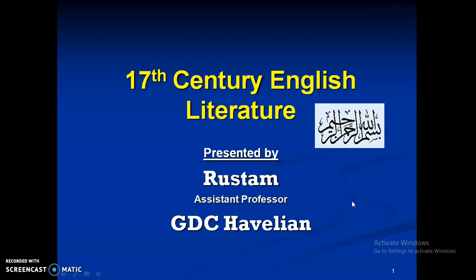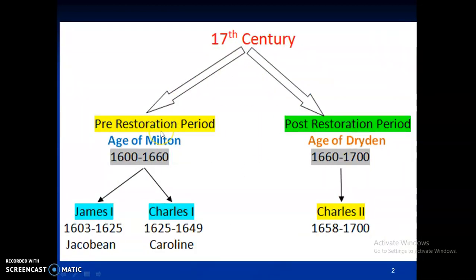Now the 17th century is further divided into two strata or two sub-categories: the pre-restoration period and the post-restoration period. I'll quickly talk about these things because I'll be recording more lectures explaining them in detail, but here I just want to give an overview to BS English first semester students. Some topics will be given as presentation topics, so I won't go into detail. The pre-restoration period is also known as the Age of Milton, because Milton was a very prominent figure during this period, from 1600 to 1660 AD.